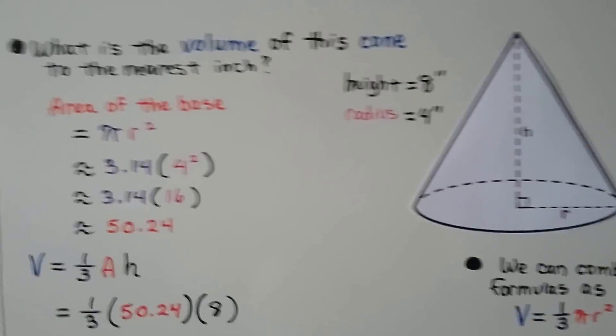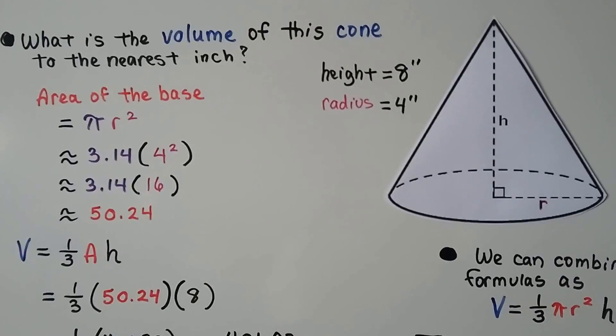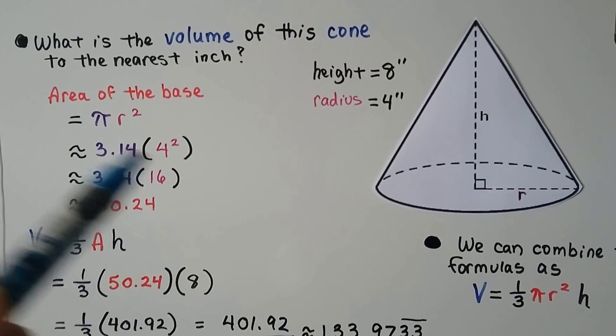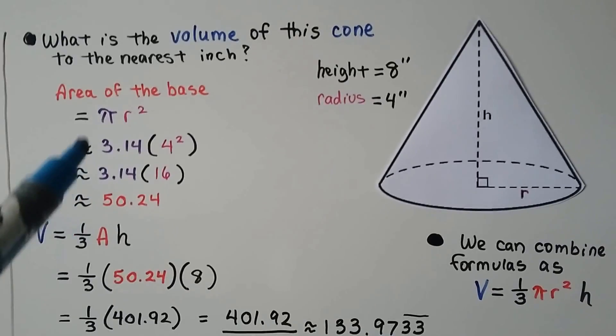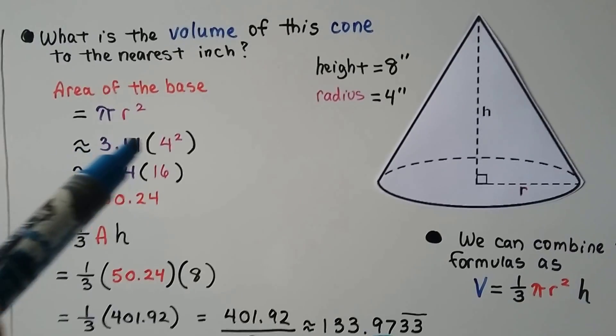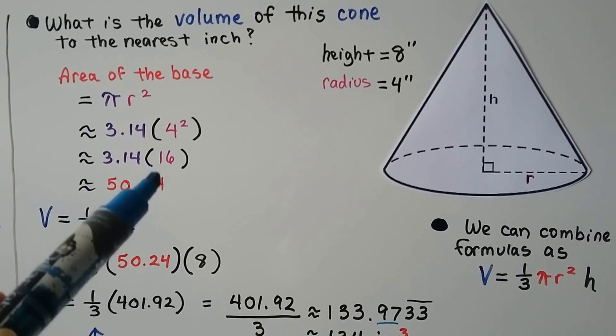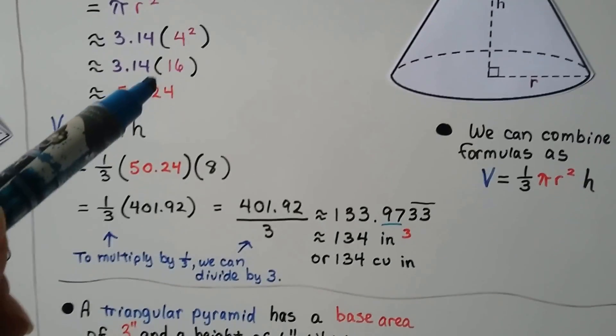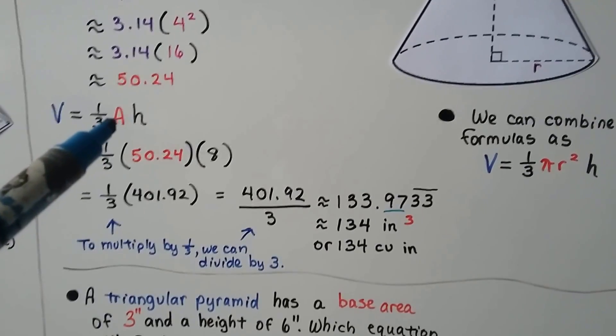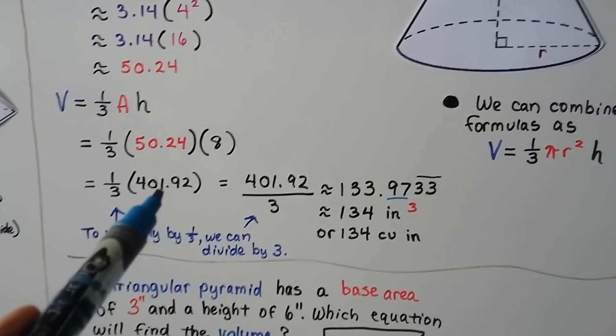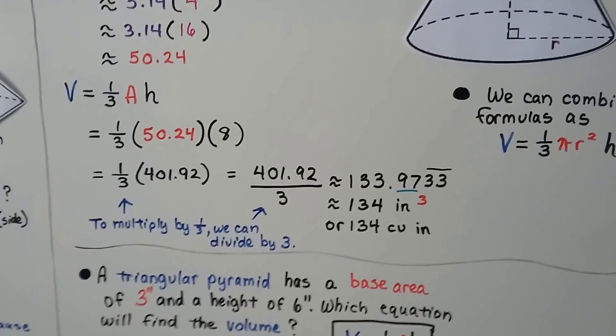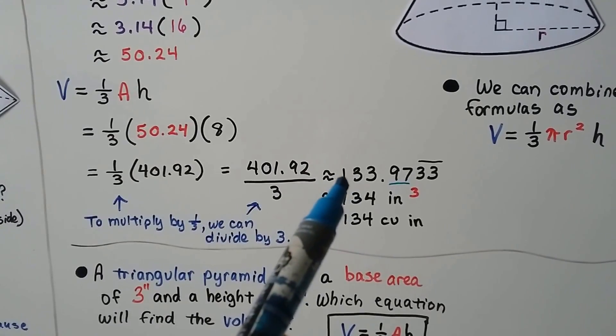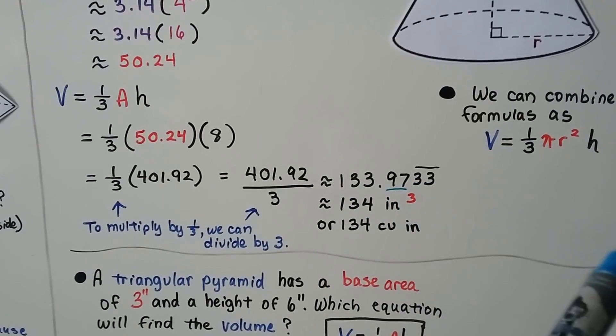What is the volume of this cone to the nearest inch? So we can see that it's got a height of eight inches and a radius of four. So the area of the base, the circle, is going to be pi r squared for the circle. Now because we're using pi, it's going to be approximate. So we're going to have the radius is a four, so we have four times four, which is 16. We multiply that by the 3.14 and get 50.24. Now we can put that 50.24 in place of that a, area of the base. We multiply 50.24 times 8 and get 401.92. And we don't want to multiply it by .33 because it's not very accurate. So we're just going to divide it by 3.